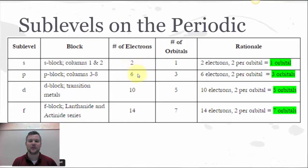Since P can hold a total of 6 electrons, 6 divided by 2 equals 3 total orbitals. 10 electrons divided by 2 equals 5 orbitals. And then 14 electrons divided by 2 equals 7 orbitals.